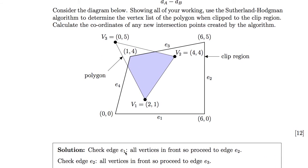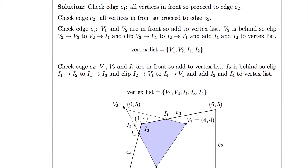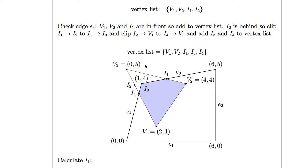Checking edge E4: we're now using the updated vertex list. V1, V2, and I1 are all in front, so they can be included. The edge I1 to I2 crosses E4 at a new point I3, and I2 to V1 crosses E4 at a new point I4. I2 is no longer in the vertex list — it's been replaced by I3 and I4. Having considered all edges, that's our final vertex list.